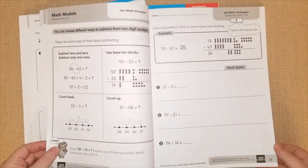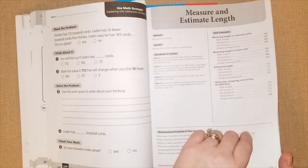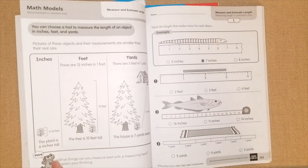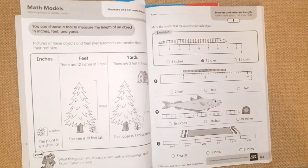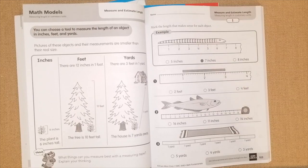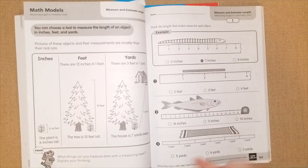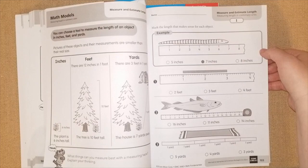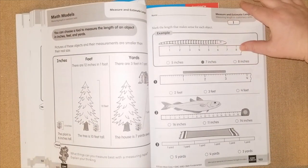I'm going to jump over to measure and estimate length chapter where they talk about inches, feet and yards and they kind of visually give you an example. The plant is going to be six inches tall, the tree is going to be 10 feet tall, the house is seven yards away. And then it has a little thinking owl right here that says what things can you measure best with a measuring tape, explain your thinking. They give you an example here with a ruler that is representative inches and they're asking is it five inches, seven inches or eight? It's clearly seven inches, so it's really nice how they do that.